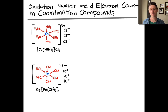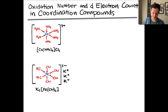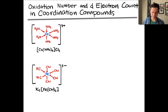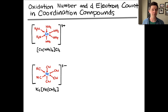When determining the oxidation state of the metal center, the first thing to do is to determine the charge on the complex and ignore the counter ions. We're going to ignore the chlorides in the first case and the potassiums in the second case, since we've already used them to determine that the charge of the complex is 3 plus in the first case and 3 minus in the second case. From that total charge and the charges on the ligands, we can infer the charge on the metal center.